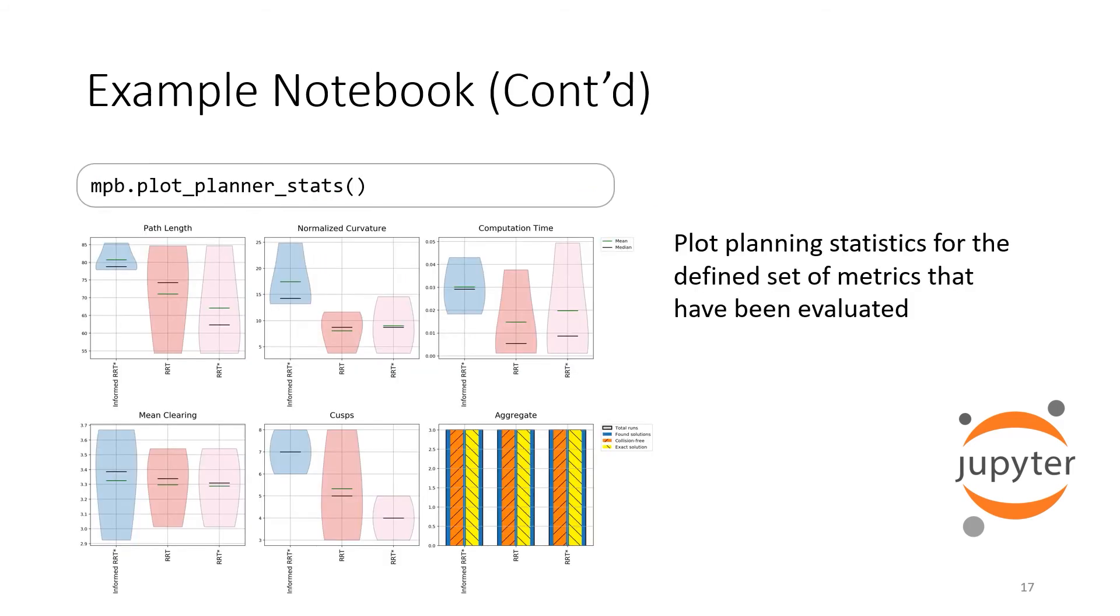With a single function call, we can also plot various statistics over all the runs. Here we plot the path length, normalized curvature, computation time, mean clearing distance, and the number of cusps. The bar plot shows the number of found, collision-free, and exact solutions.